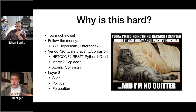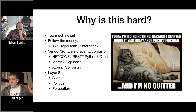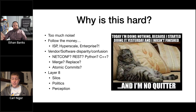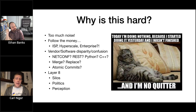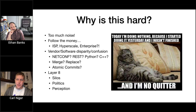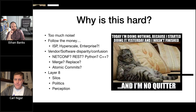Cisco has many operating systems — XR, XE, NX-OS, with NETCONF support to varying extents — plus things like ACI and DNA Center with more RESTful APIs. Arista has an eAPI. The net-net is this is hard because if you have different vendors or even one vendor with different operating systems, how do you automate against that consistently?